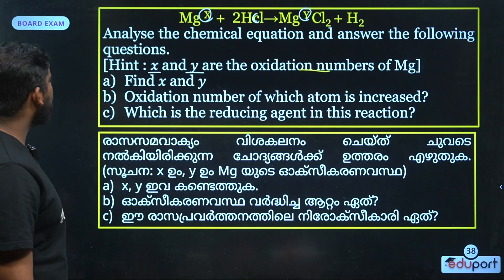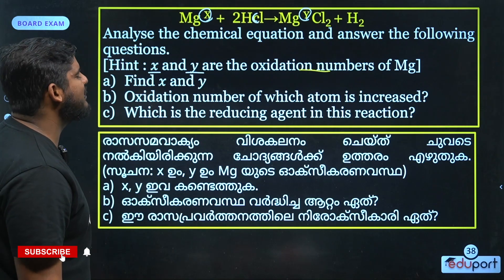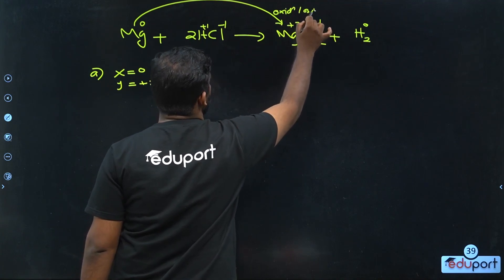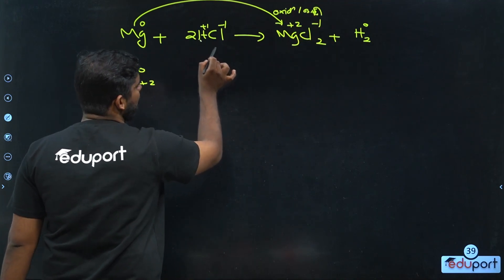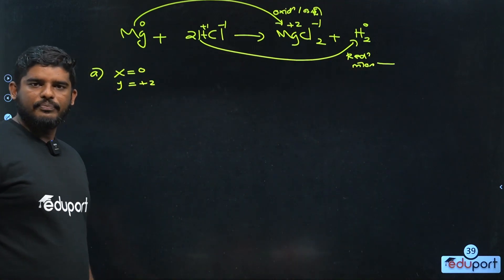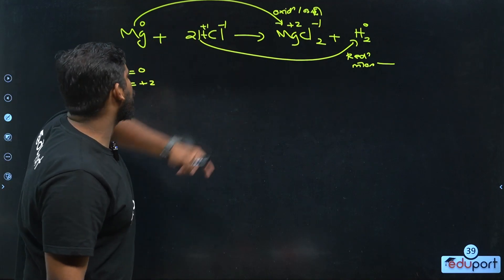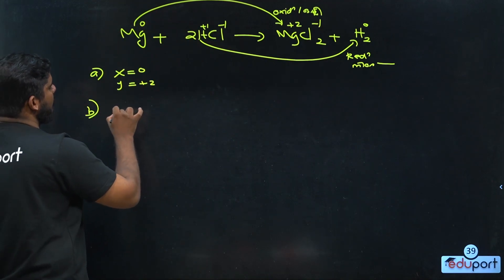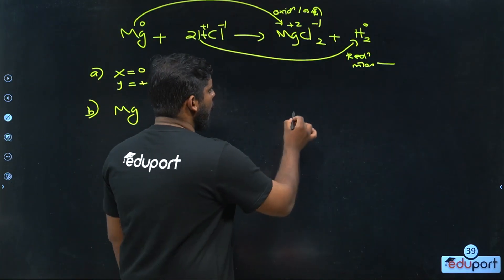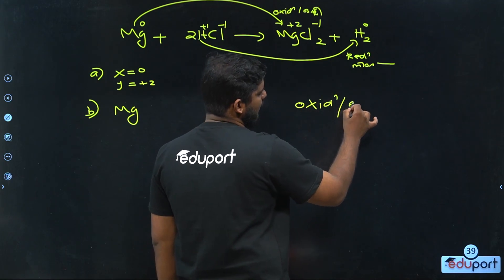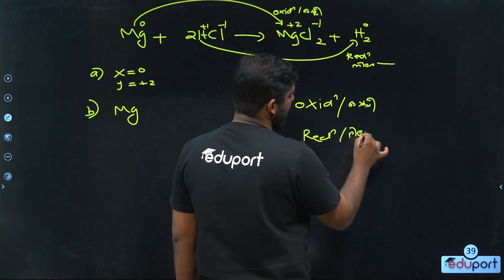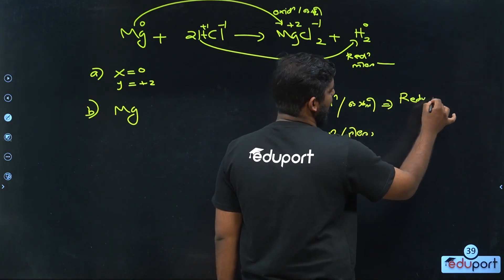The next is: oxidation number of which atom is increased? Magnesium 0 to magnesium 2 plus — that is oxidation. That means it's oxy. That means H0, that is reduction, that is not oxy. Clear? Now, if you have 6 charge, it's 0 to plus 2 — Magnesium. That means, which is the reducing agent? When you study oxidation, it's oxy. Reduction, it's not oxy. Oxidation is called reducing agent.